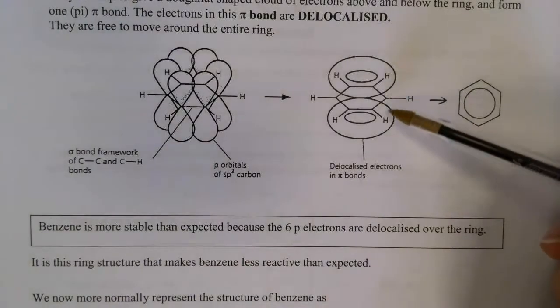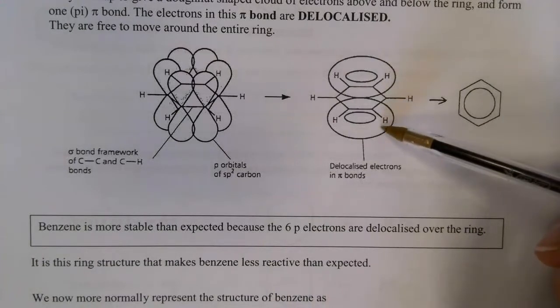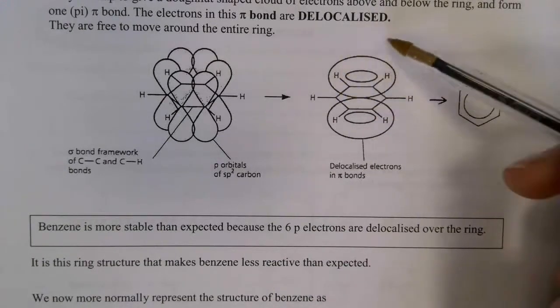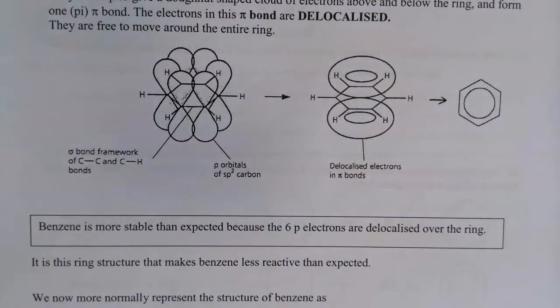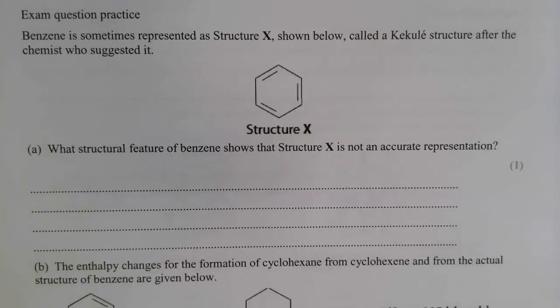So we have this delocalization above and below the plane of the molecule resulting in this pi bonded system. Benzene is much more stable than expected because the six p electrons are delocalized over the ring, and this has an enormous impact on its reactivity. It doesn't react as you would expect a normal unsaturated compound to react. On page six we've got an exam practice question for you to have a go at, so I'd like you to pause the video at this point.